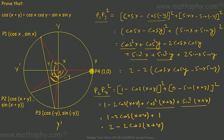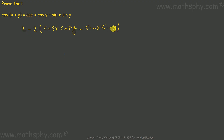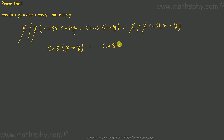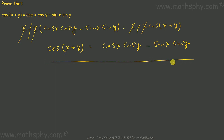Since the two triangles are congruent, P1P3 = P2P4, and therefore their squares are equal. Setting P1P3² equal to P2P4²: 2 − 2(cos x cos y − sin x sin y) = 2 − 2 cos(x + y). The 2s cancel and the negatives cancel, giving us cos(x + y) = cos x cos y − sin x sin y. That is what we had to prove. This is one of the most important identities, and it will give us many more identities to establish.